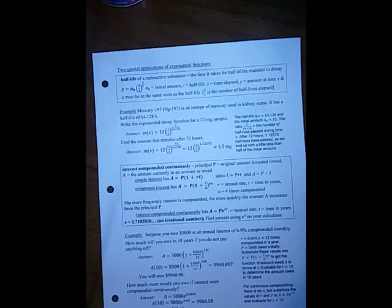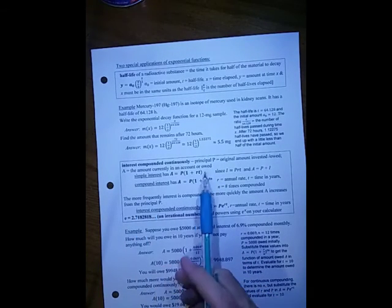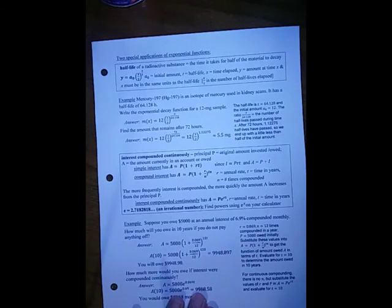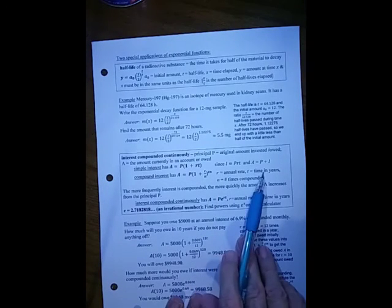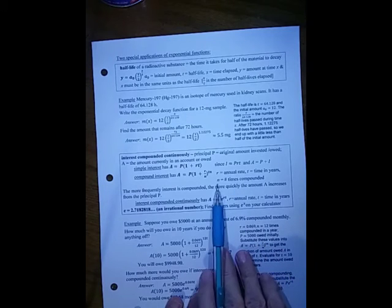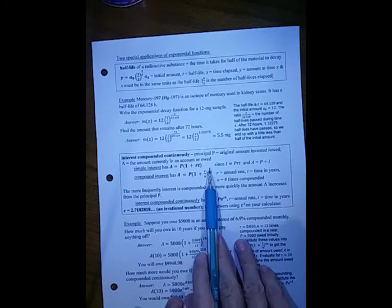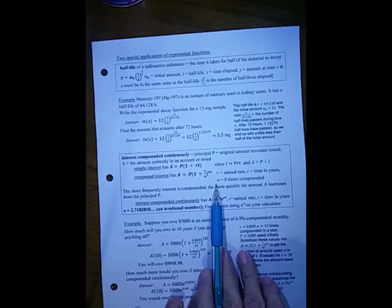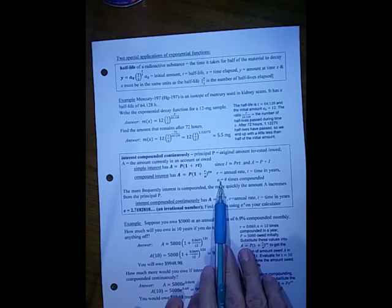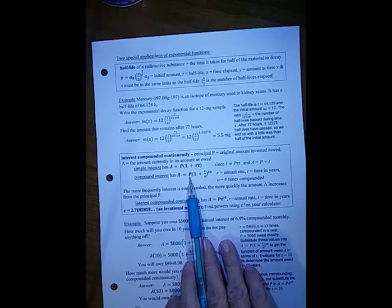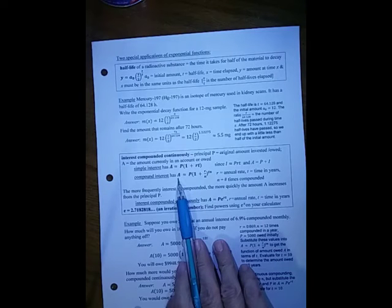Interest is compounded continuously with principal P, the amount originally invested or owed, and A is the amount currently in the account or owed. If you have simple interest, the current amount is P times 1 plus r to the t. But if you make it compounding, where you do it more than once, r is the annual rate, t is the time in years, and n is the number of times it's compounded in those years. So t times n would be the number of total times it's compounded. We take the overall rate and divide that into n pieces. You get 1 plus r over n, and then raise that to the number of times it's compounded, and multiply by the original principal P.